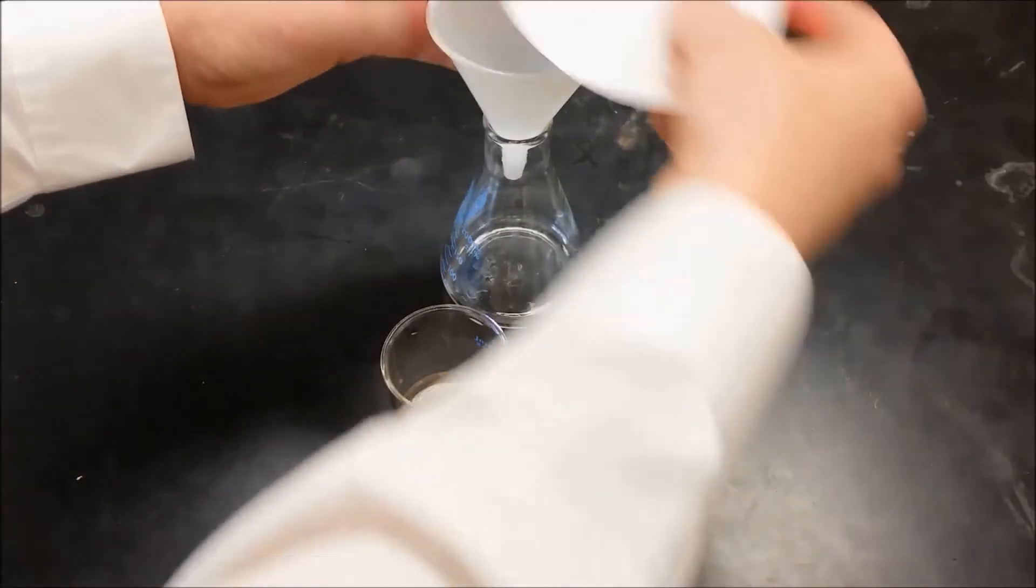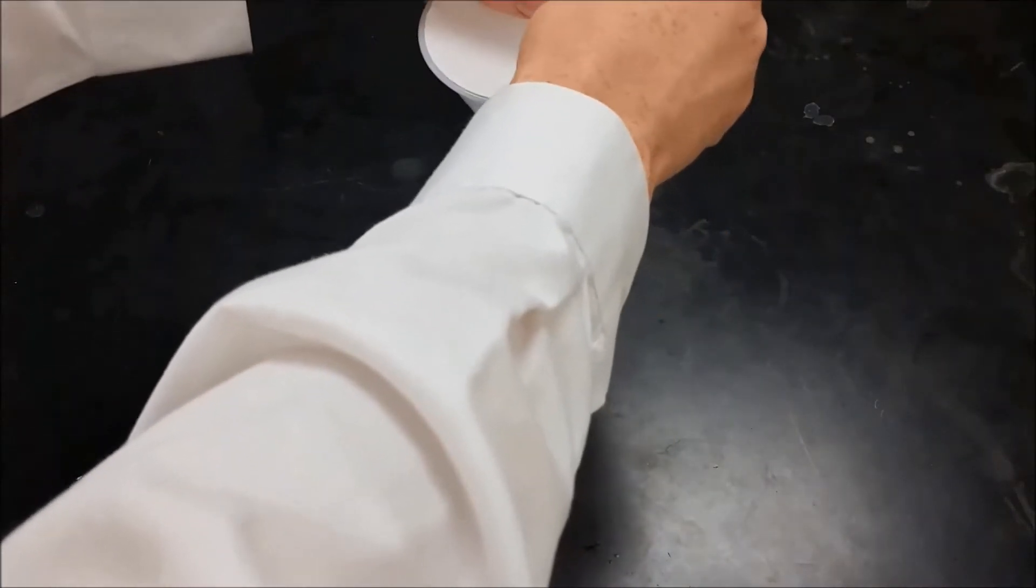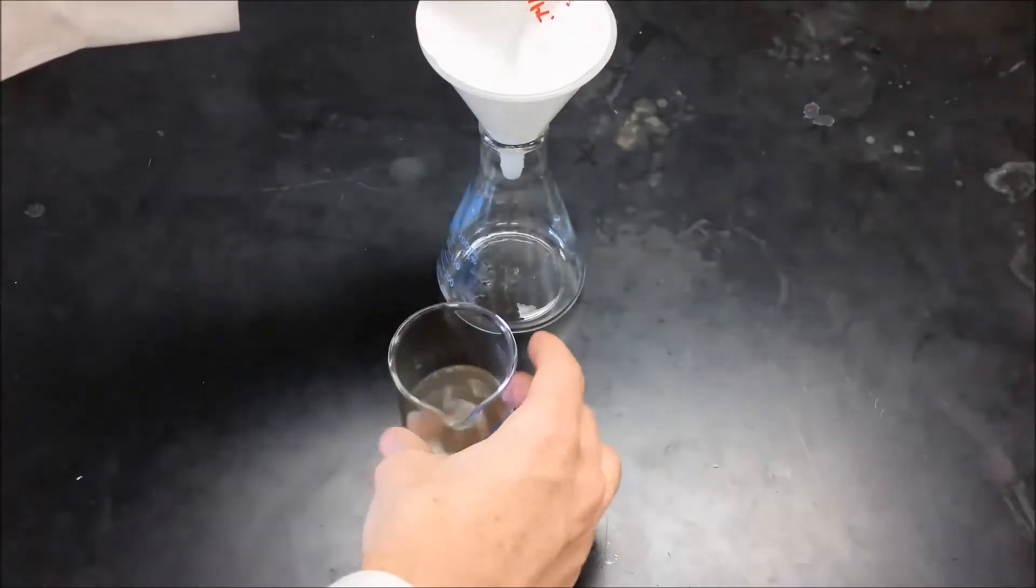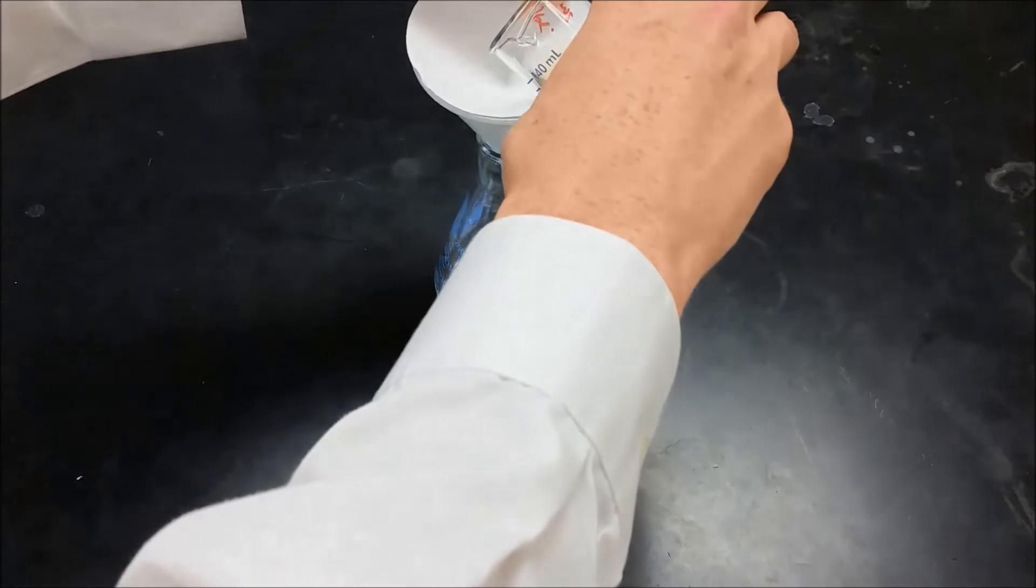So now we're going to go ahead and put our filter paper here. We're going to get it to fold by pushing down in the center, get our cone shape. And then we need to pour some of the solution in here, get that to stay in place.